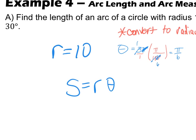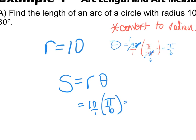So my formula for arc length is S equals R times theta. I have my R, which is 10. I have my theta, which is pi over 6. So now we simplify. 10 times pi is 10 pi over 6. I can divide the top and bottom by 2. And I get 5 pi over 3. Simple enough.